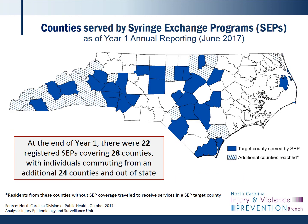In July of 2016, syringe exchanges were legalized in North Carolina. This map shows counties served by a syringe exchange, or SEP, at the end of the year one annual reporting period. There were 22 registered exchanges serving 28 counties across the state. Individuals from an additional 24 counties and from out of state visited one of the 22 exchanges during year one — those additional counties served are depicted with blue stripes in the map. Additional exchanges have continued to come on board, and as of December 2017, there are 26 active exchanges serving 32 counties across the state.